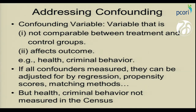If all the confounders are measured, methods such as regression or propensity scores can be used to adjust for them. But in most observational studies there are unmeasured confounders. In this study, both health and criminal behavior are not measured in the census.